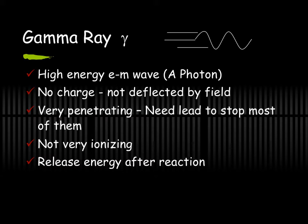The last type — most penetrating but least harmful — is the gamma ray. Millions of gamma rays can pass through you with no effect, as they cause very few ions. Gamma rays are a form of electromagnetic radiation, like light, X-rays, or radio waves, and come in packages called photons. They have no charge and are therefore not affected by electric or magnetic fields.